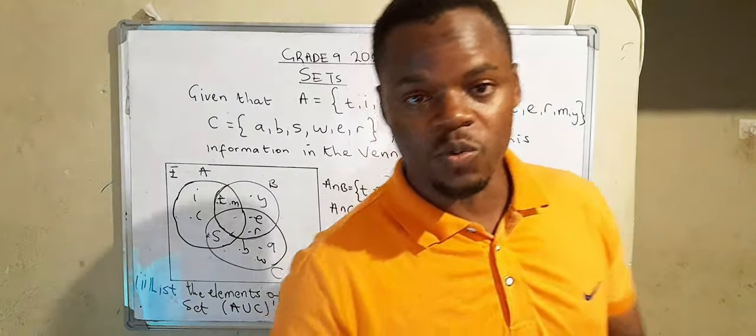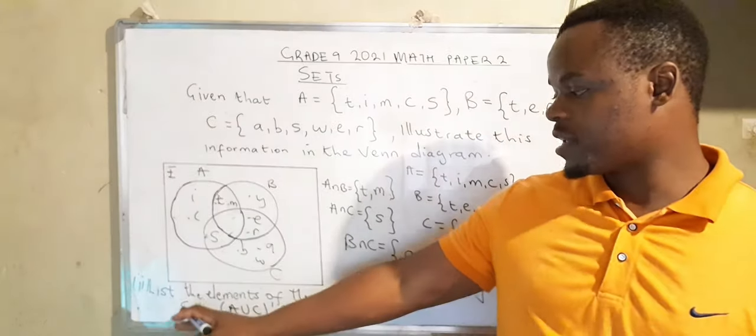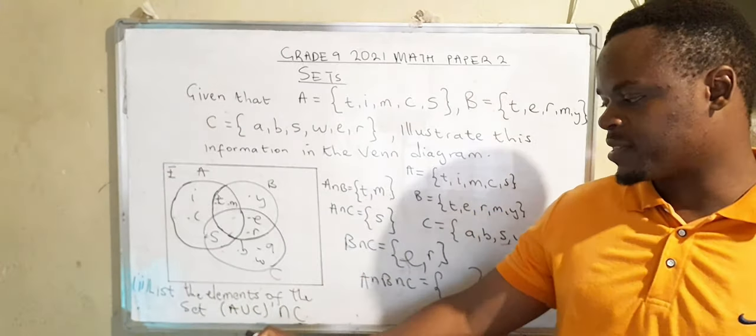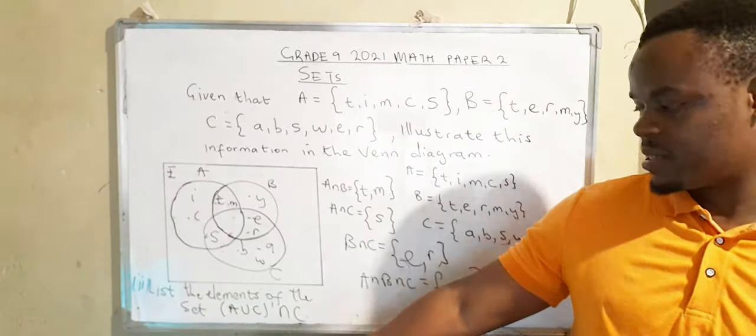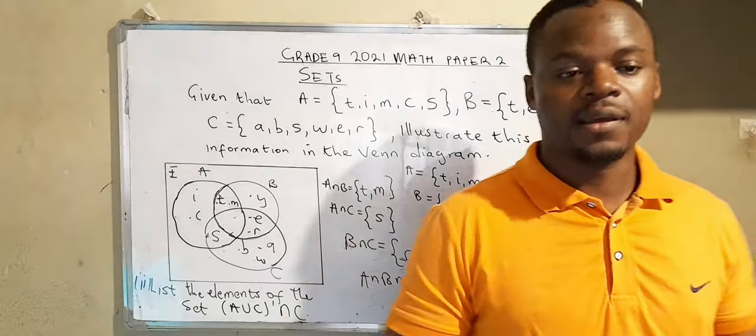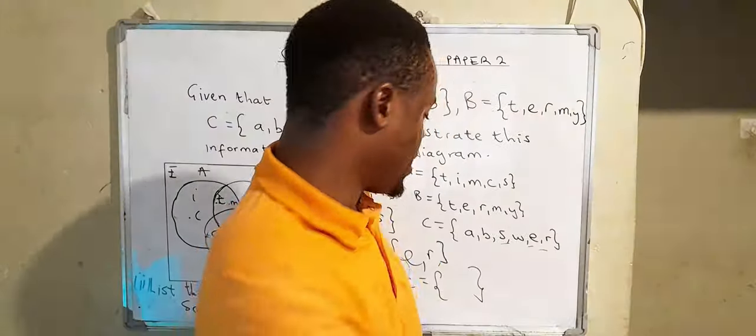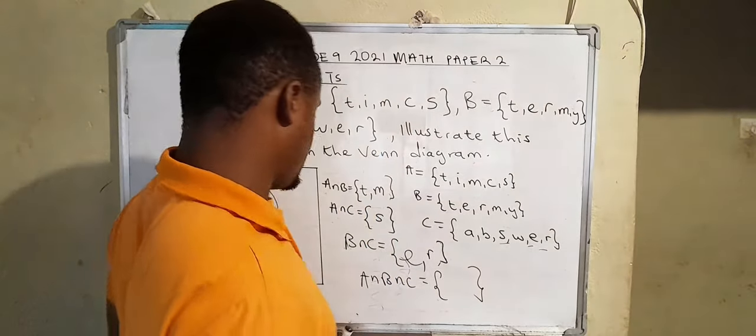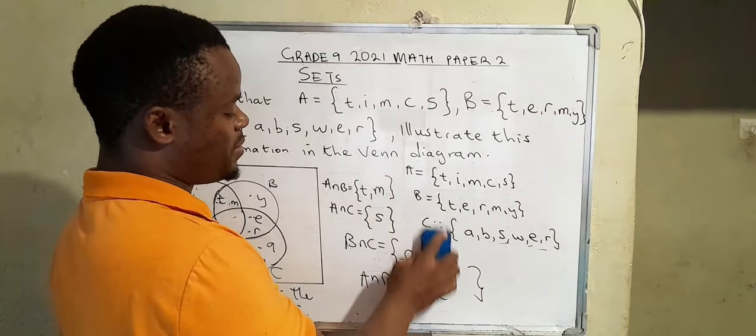Let's now answer the second question. The second question says, list the elements of the set (A∪C)' ∩ C. Now for you to be able to answer this question, what you really have to do is this.